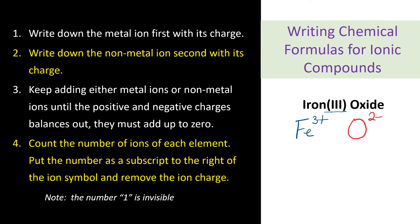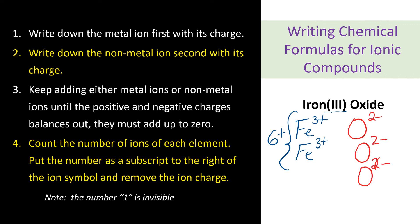Now we need to cancel the charges and make sure they add up to zero. Start with the lower charge — oxygen has 2-, so we're going to add one more oxygen. Now we have a total of 4- on the oxygen side. We need to add another iron, giving us 3+ and 6+ total. Now we need to make oxygen 6-, so we add another oxygen. The total charge on the oxygen is 6-, and 6+ and 6- cancel each other out.